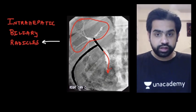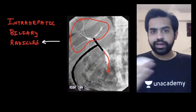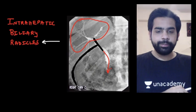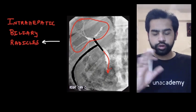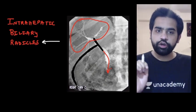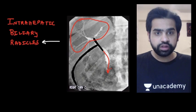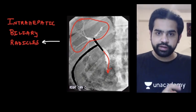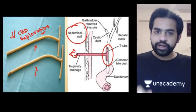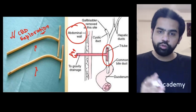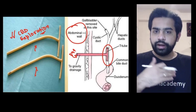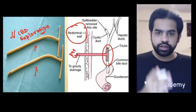If a stone is still present, you keep the T-tube for 4 to 6 weeks, after which you remove it, pass a colonoscope, and remove the CBD stone. In summary, T-tube cholangiography is performed post-operatively to look for any retained stone in the common bile duct, and the T-tube is removed on post-operative day 8 to 10 after performing the cholangiography on post-operative day 6 to 7.